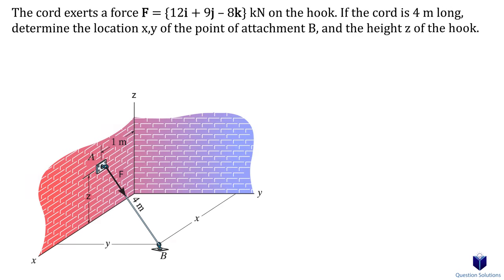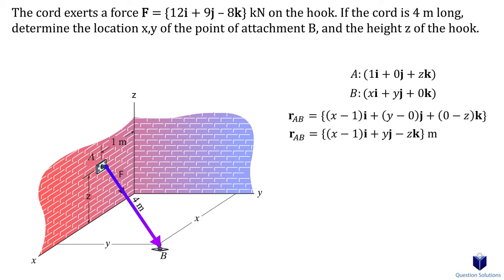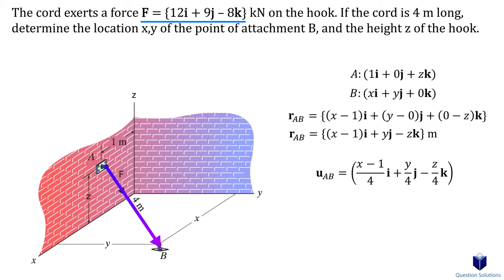Let's take a look at one last example, where we have a force already given to us in Cartesian form and we need to find the location of point B. First, let's write down the locations of points A and B. When we don't know the value, we'll use x, y, and z letters to represent the locations. Now we write a position vector from A to B. Notice that we're given the length of the rope — in other words, the magnitude — so the unit vector will be each term in the position vector divided by the magnitude.